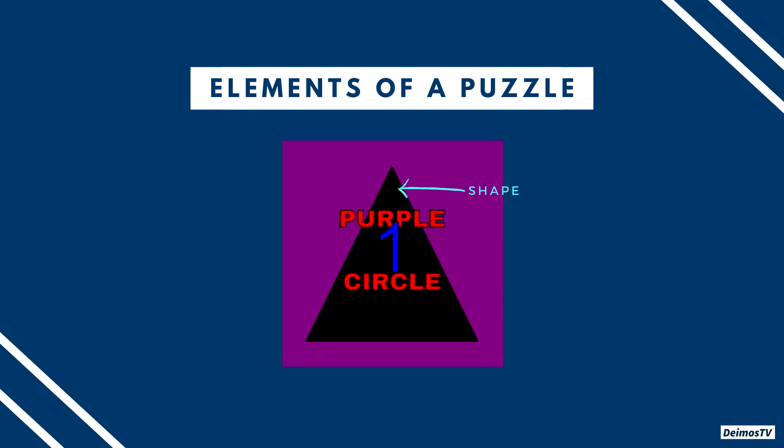The first set is the shape. This set only has one element, and that's the shape. It's pretty straightforward since you only need to identify the shape of the puzzle — in this case, that's triangle.